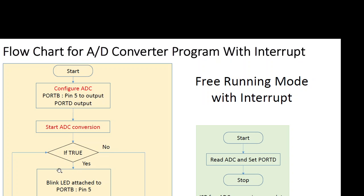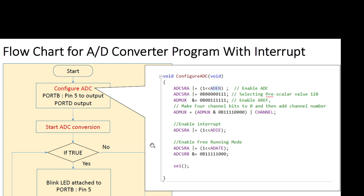Whenever a conversion finishes, it generates the interrupt. The program goes to the ISR, sets the port, comes back, and keeps doing whatever it was doing. When the next conversion finishes, it generates the interrupt again. In this way, execution alternates between the main program and the interrupt service routine.